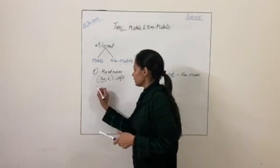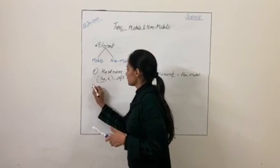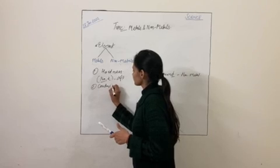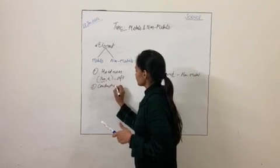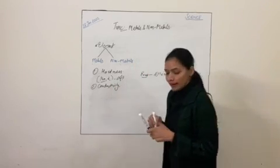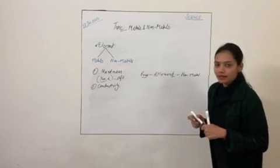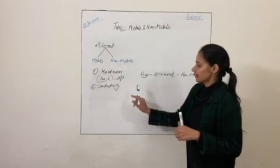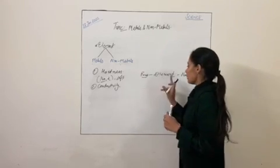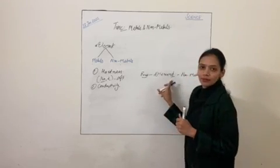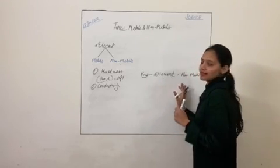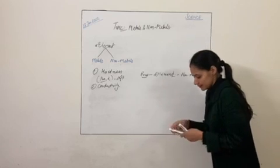The next property is conductivity. Metals are good conductors of heat and electricity, but non-metals are poor conductors of heat and electricity.